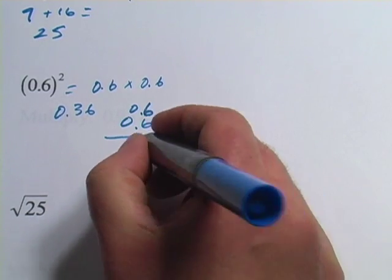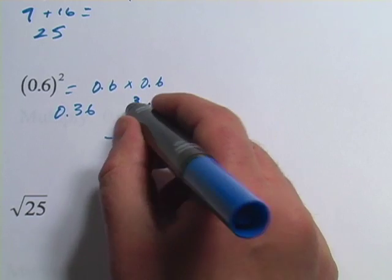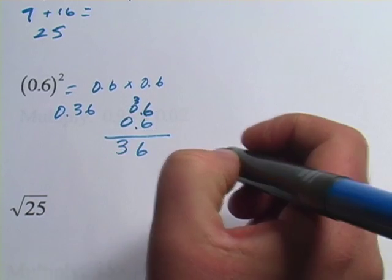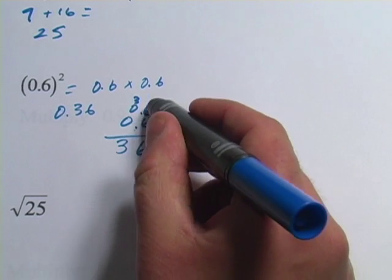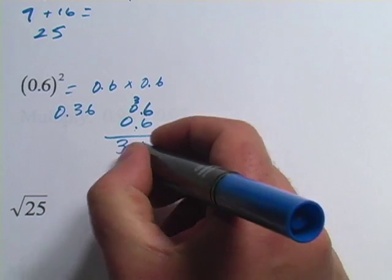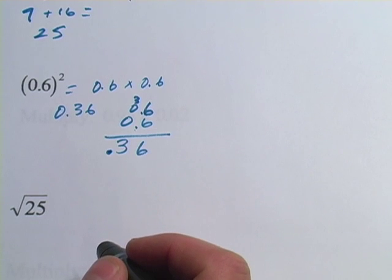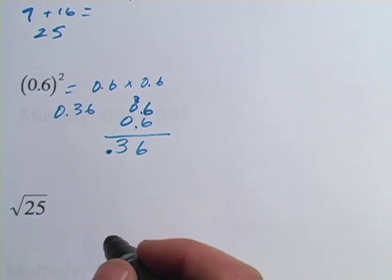6 times 6 is 36. 6 times 0 is 0 plus 3. There's our 3, 6. The rest of it's going to be zeros. And we've got 1, 2 places behind the decimal point, so 1, 2 places behind the decimal point. Either way you do it, it's going to come out as 0.36.